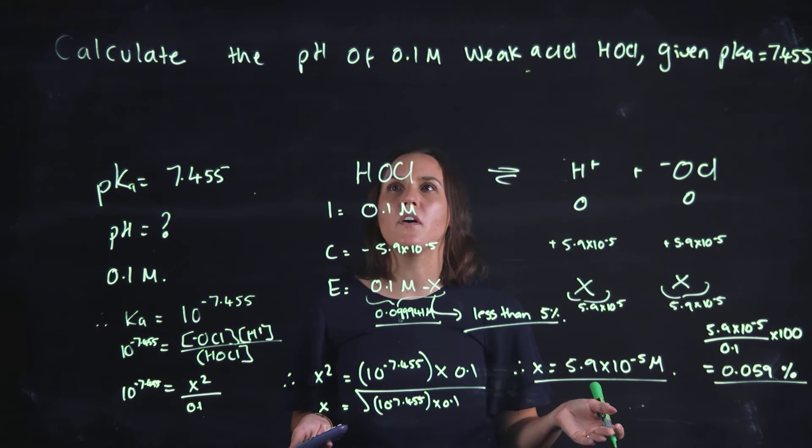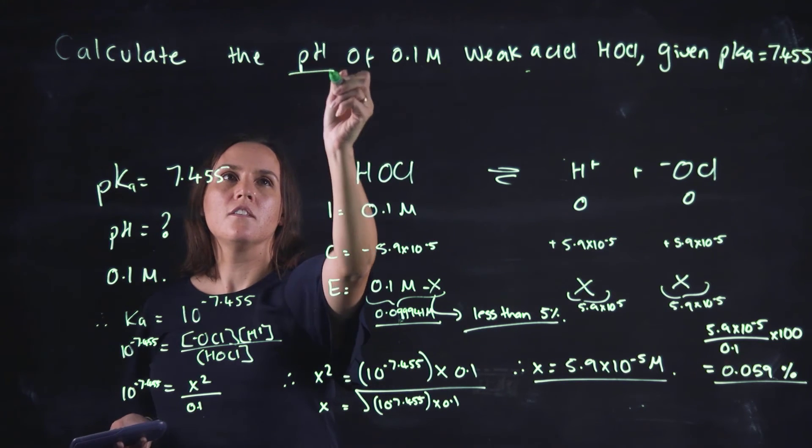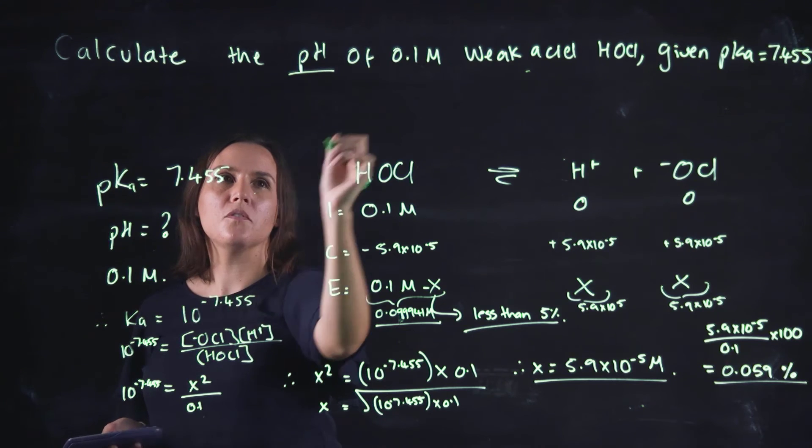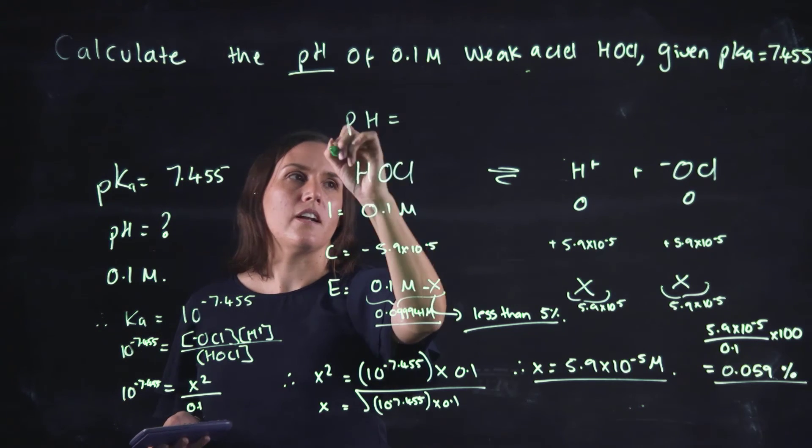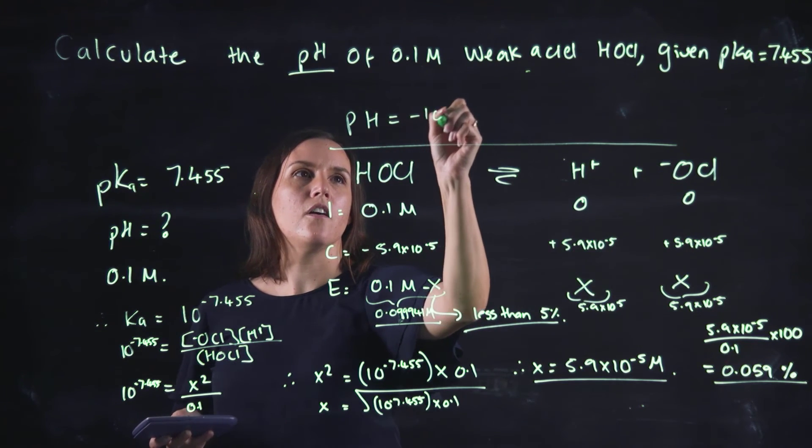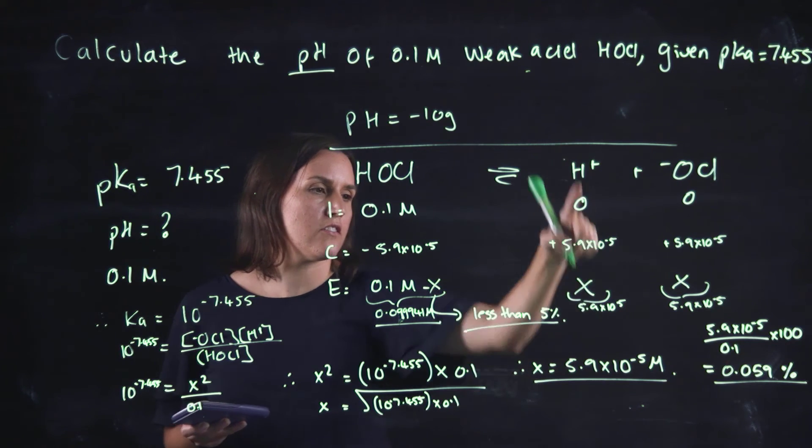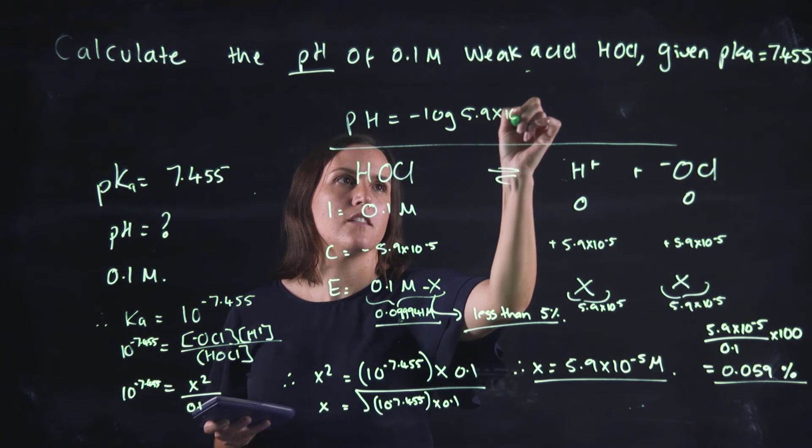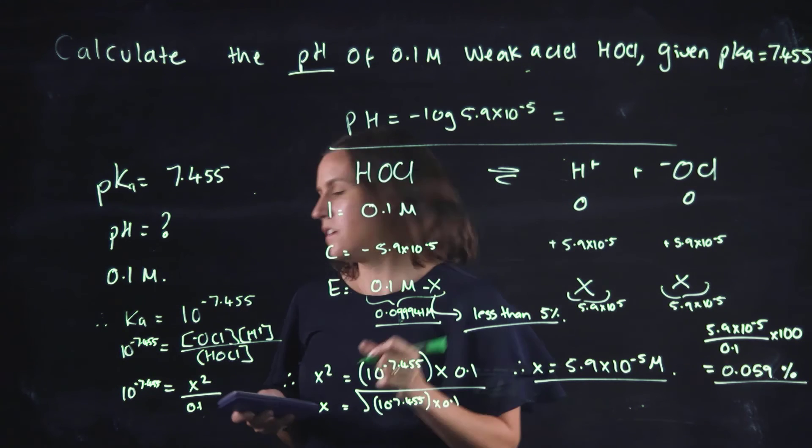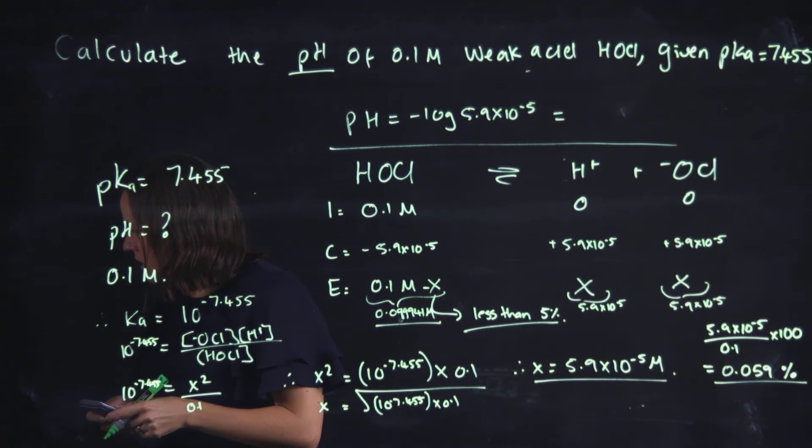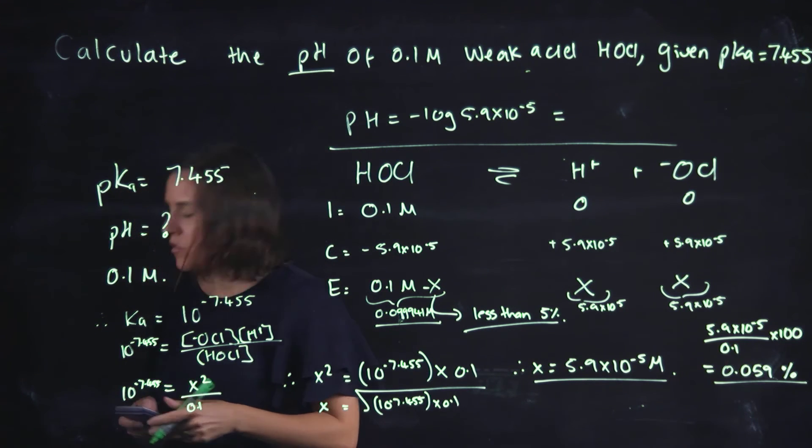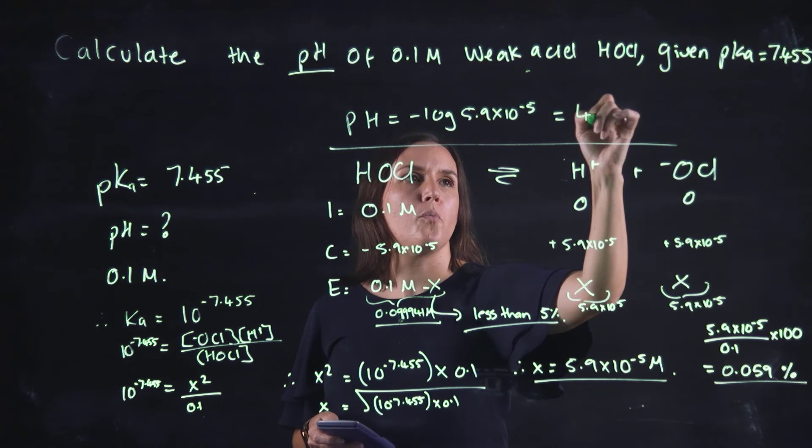Now the original question was the pH, so the pH equals, I'll write it up here because I've run out of room, the negative log of the hydrogen ion concentration so it'll be 5.9 by 10 to the minus 5, and that would be 4.23.